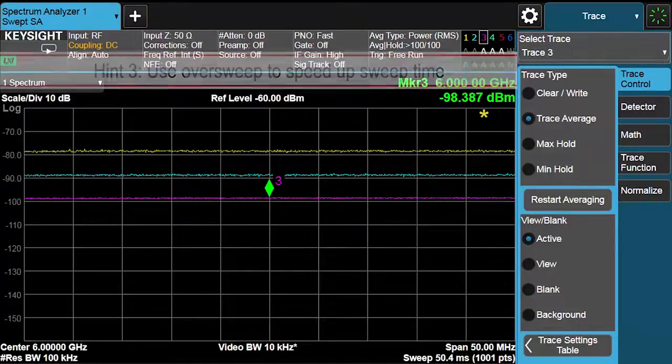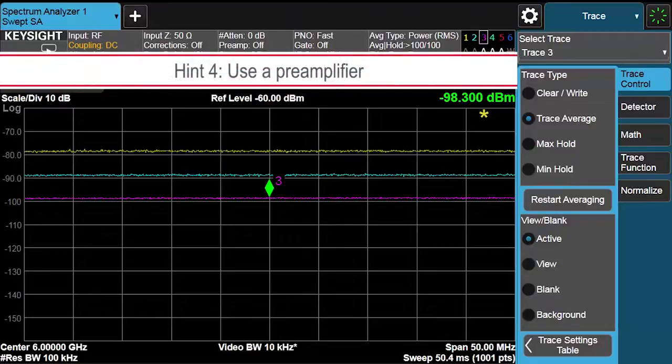Another technique to improve sensitivity is to use the analyzer's internal pre-amplifier. The internal pre-amplifier can greatly improve analyzer sensitivity, and one might ask the question, why not use the internal pre-amplifier all of the time? The answer is that if you're measuring high-powered signals in the presence of low-powered signals, and the pre-amplifier is turned on, then you can compress or overload the analyzer's mixer, resulting in distortion of your measurement.